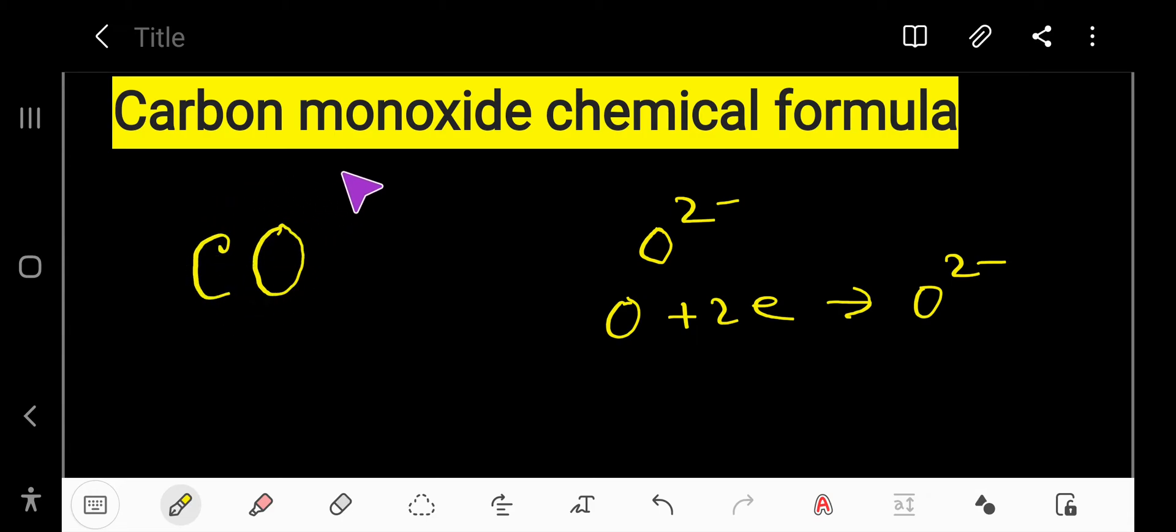This is the chemical formula of carbon monoxide: CO. In the chemical formula, you will get the elements carbon and oxygen—two types of elements.